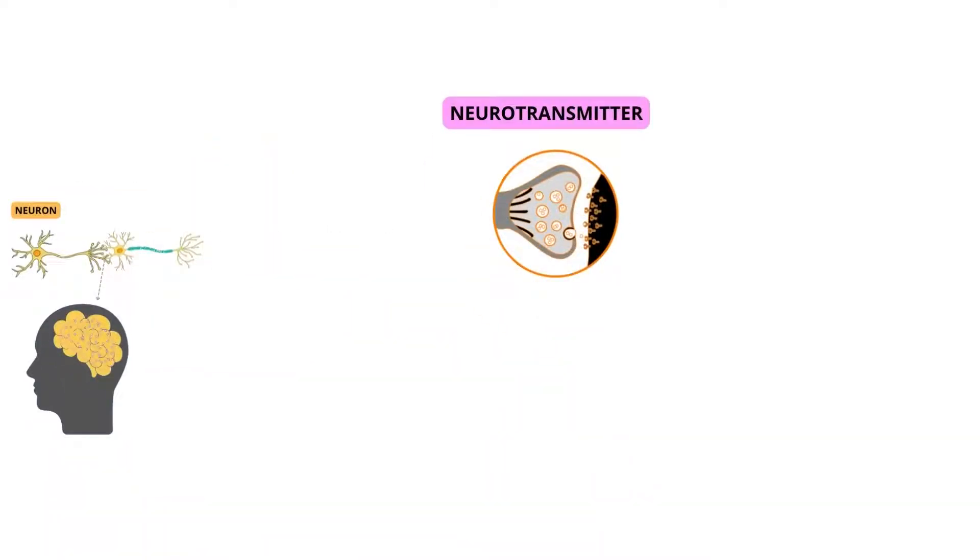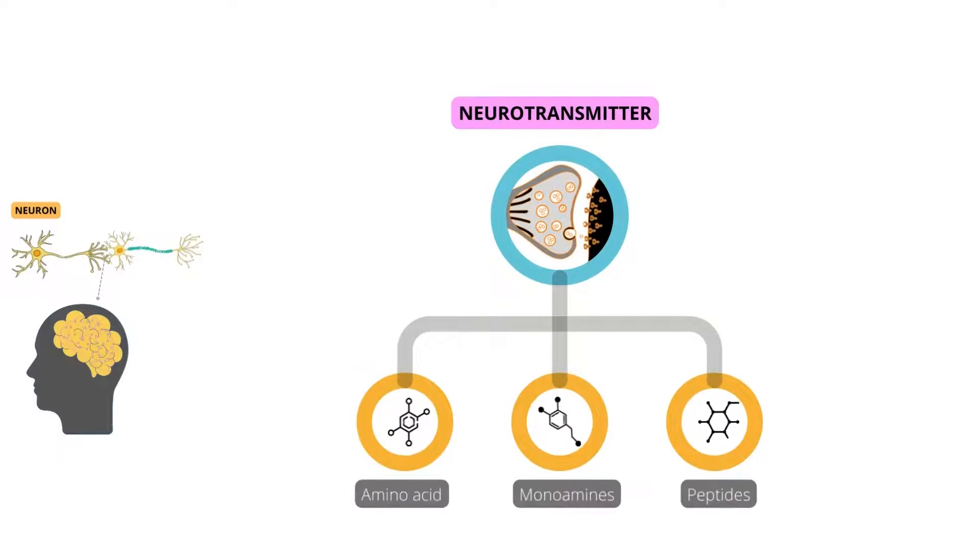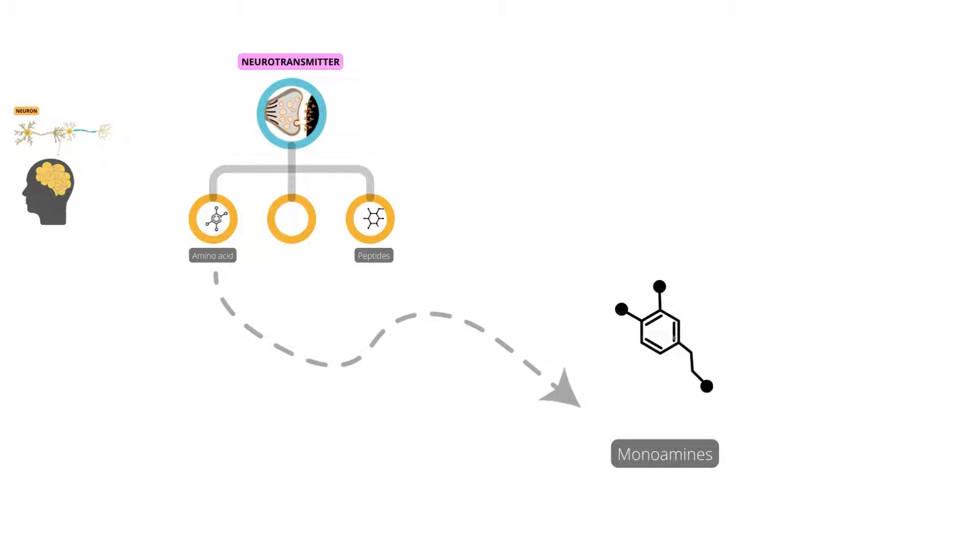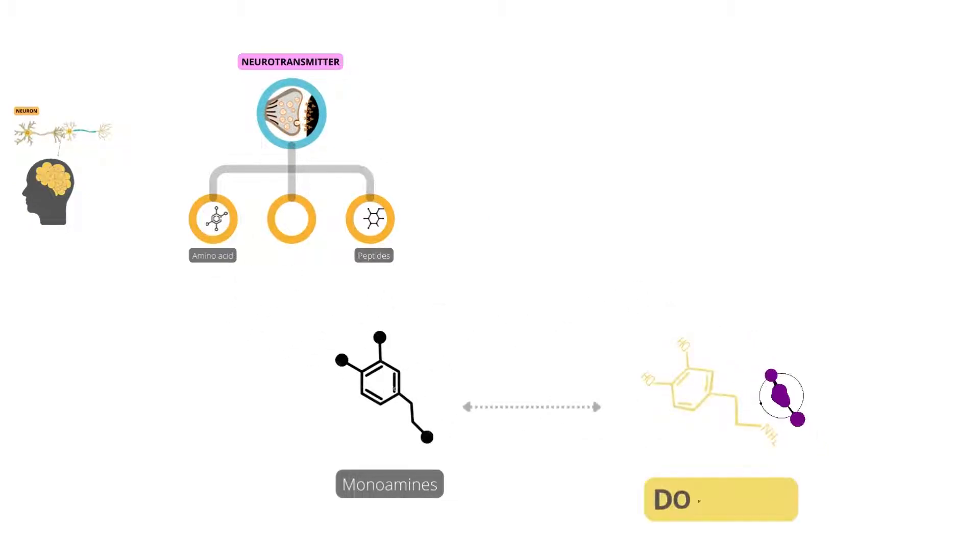These neurotransmitters, also called the chemical messengers in our body, are made up of amino acids, monoamines, and peptides. One of which, monoamines, are synthesized by altering a single amino acid. So basically, dopamine is a monoamine neurotransmitter that also acts as a reward center in many body functions.